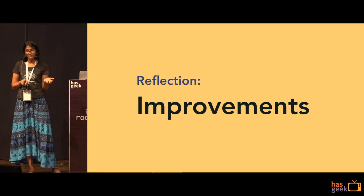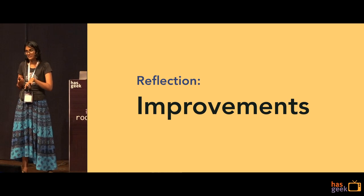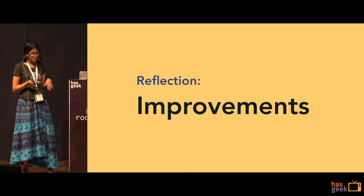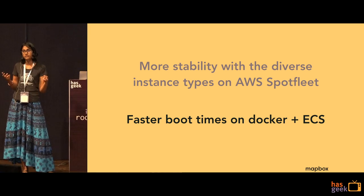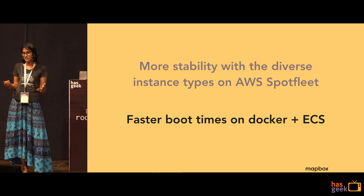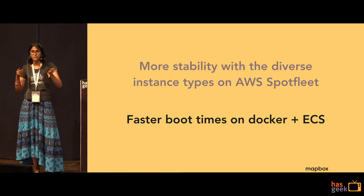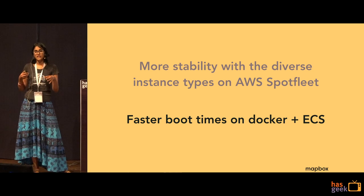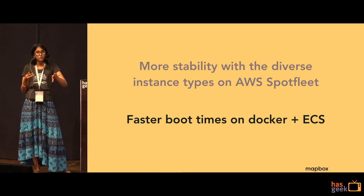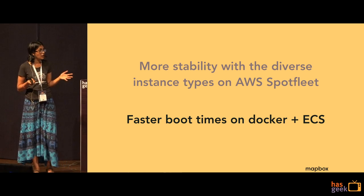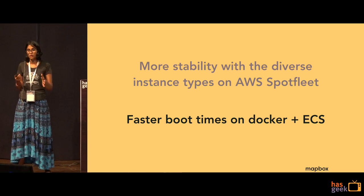This system has room for improvement. One obvious roadblock is that a spot price-out affects more than one instance because we're dependent on auto-scaling groups of homogeneous instances. One improvement we made was to use Amazon's spot fleet, which comes with a set of diverse instance types — different memory and CPU resources in the same fleet. So a spot price-out will only affect a small part of your spot fleet rather than all of it. Additionally, since we migrated to Docker and ECS, our boot times have become even faster because we're now deploying containers.